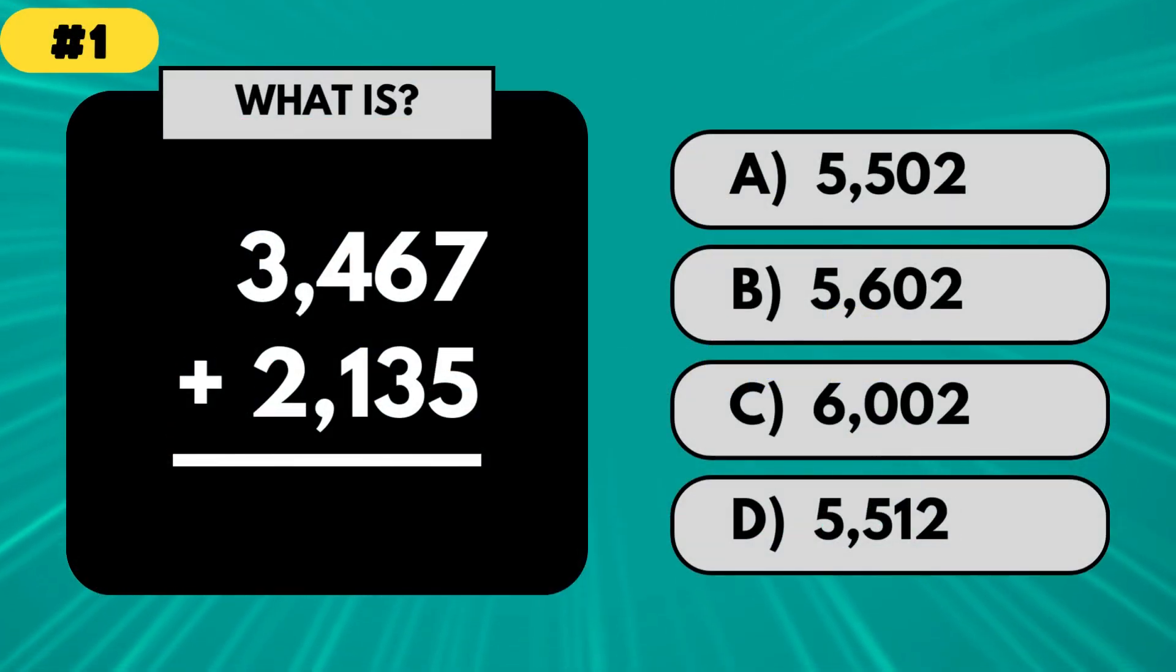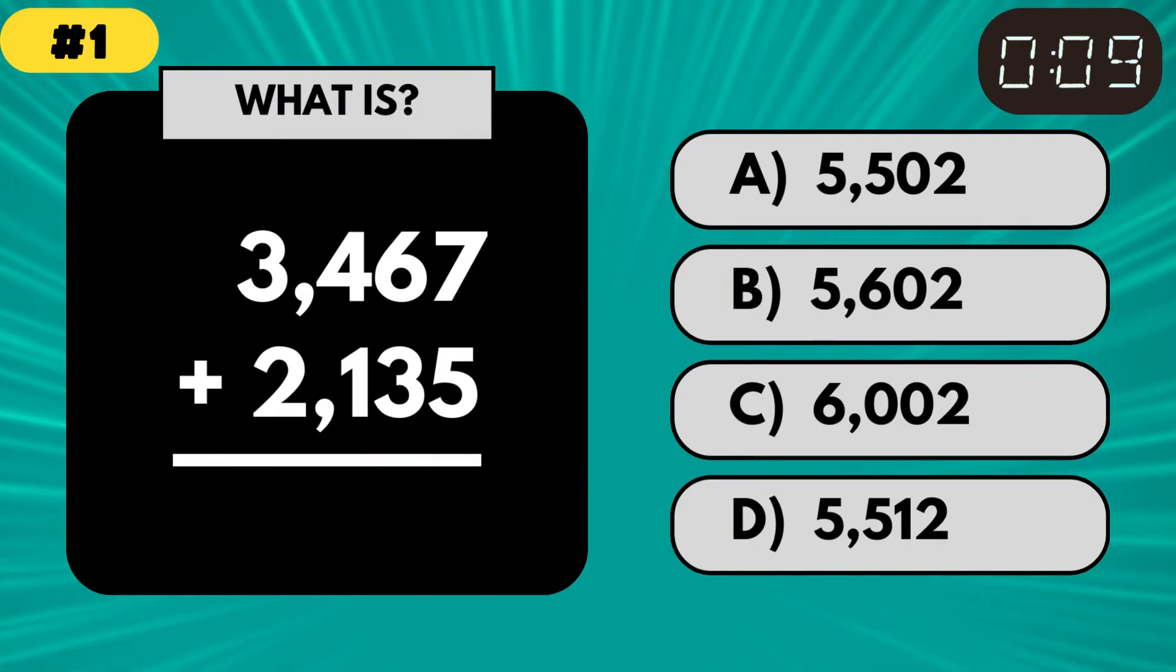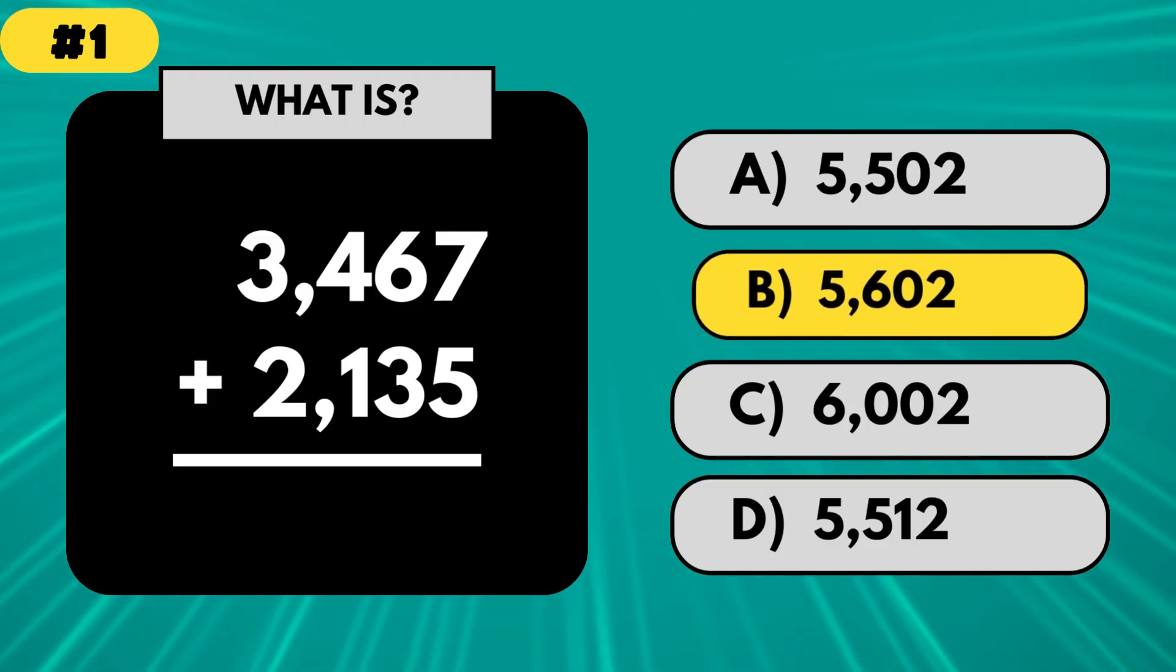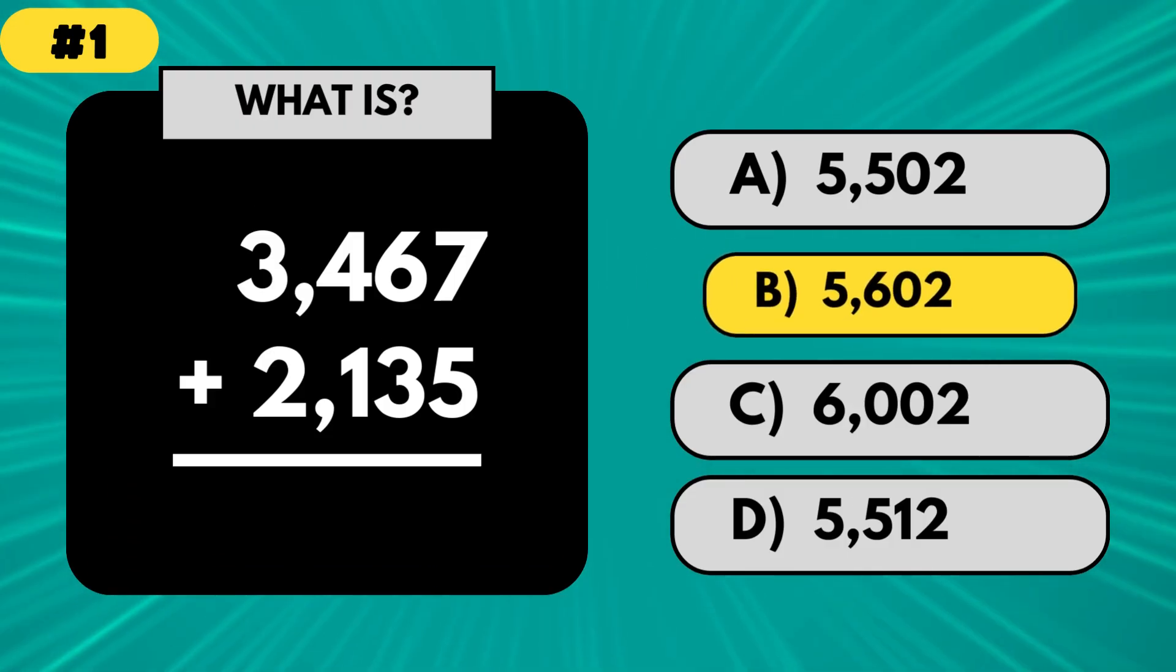What is 3467 plus 2135? The answer is 5602. Are you off to a great start?